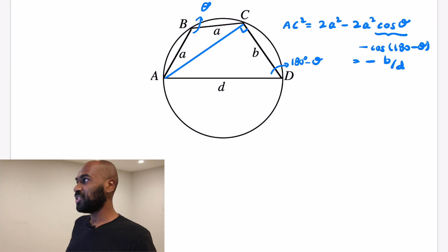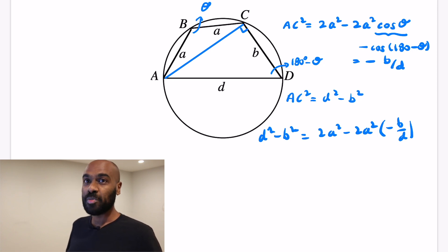So now we have a relationship for AC squared in terms of the side lengths A, B, and D, but we also have the triangle ACD, which is a right angle triangle, so we can use Pythagorean theorem to say that AC squared is D squared minus B squared. So we have an equality here. D squared minus B squared has to equal the other expression for AC squared, which was 2A squared minus 2A squared times the quantity negative B over D.